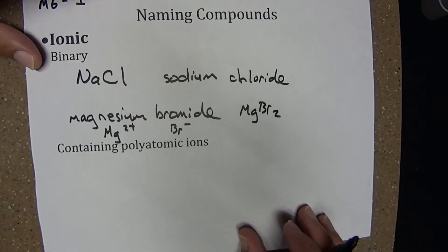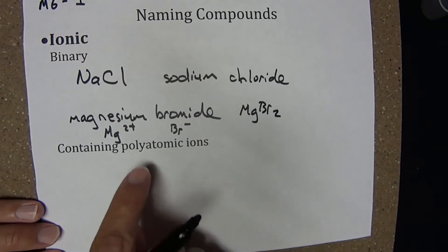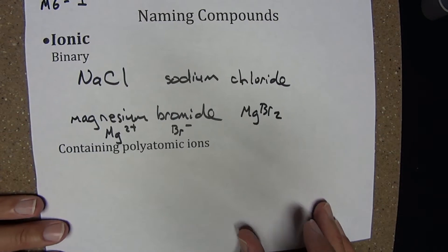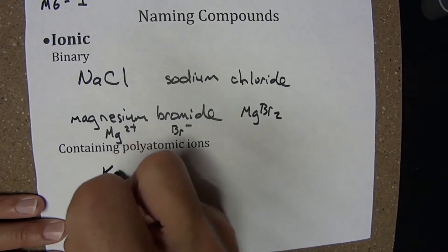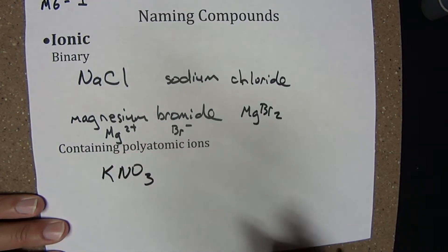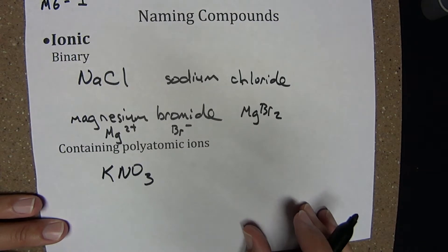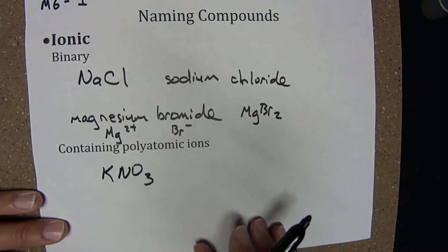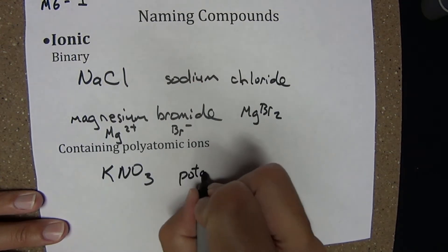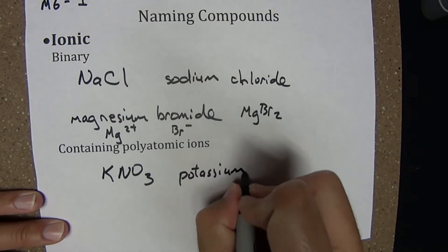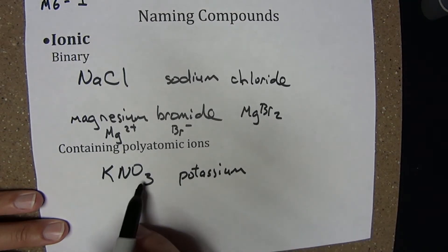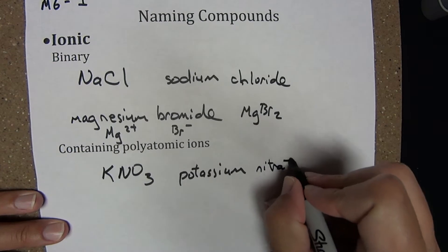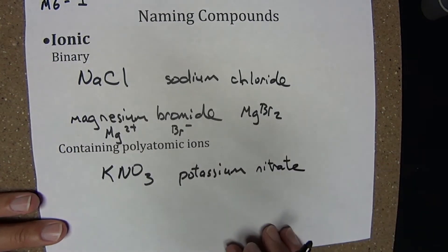Let's look at another category where the ions themselves may be made up of more than one element. A classic example is KNO₃. Naming rules are still basically the same — I'm going to name the component ions. K is potassium, and NO₃⁻ is the nitrate anion.